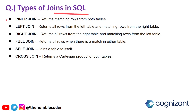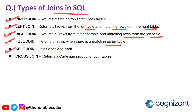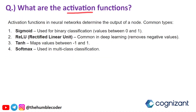The next question is: types of joins in SQL. We have different types: inner join returns matching rows from both tables; left join returns all rows from the left table and matching rows from the right table; right join returns all rows from the right table and matching rows from the left table; full join returns all rows where there is a match in either table; self join joins the table to itself; and cross join returns a Cartesian product of both tables.